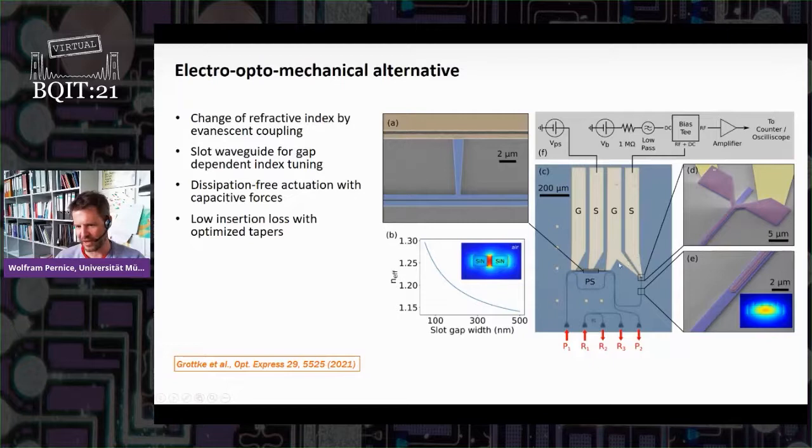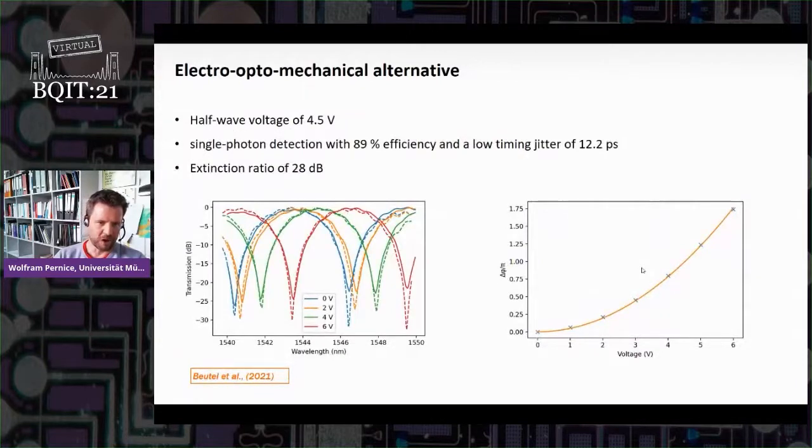So on this one, you have at the output, again, a beam splitter, and then a superconducting detector at the output, which we can measure in the same configuration. Also, this device has high extinction ratio of about 30 dB. However, the detectors are better, and they reach about 90% efficiency on this chip, and low timing jitter on the chip of about 12.2 picoseconds. This is, of course, measured with cryogenic amplifiers.